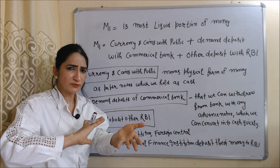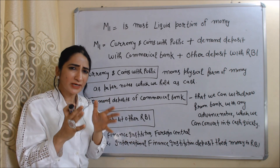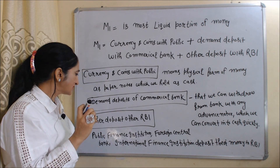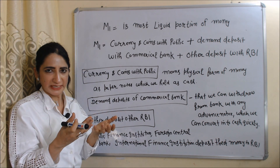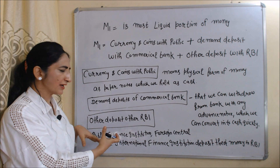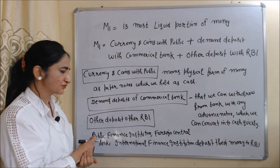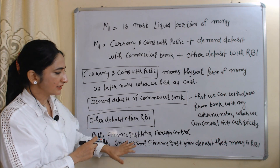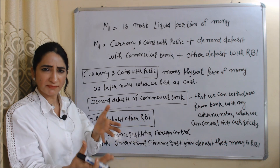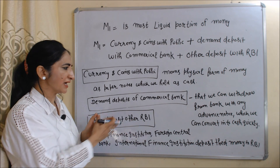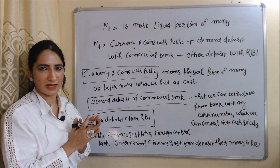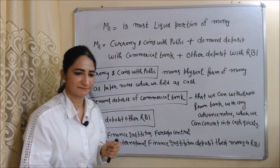The last component of M1 is other deposits with RBI. Sometimes public finance institutions, foreign central banks, and international finance institutions deposit some money in RBI — this is called other deposits with RBI.